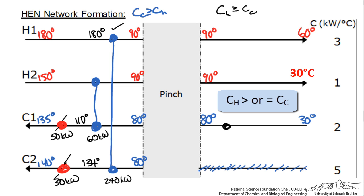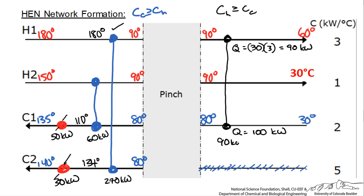Following the rule that it has to be higher, we'll match it with H1 and calculate the Q associated with this. If it were to go from 90 to 60, that would be a temperature change of 30 times 3, which gives us 90 kilowatts. On the bottom, to go from 30 to 80 gives us 100 kilowatts. Our limit is 90 kilowatts, so we'll put that under the exchange.